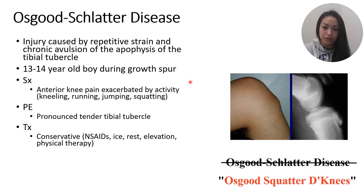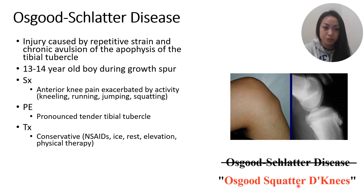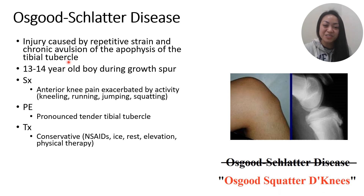Memory aid: 'Osgood-Schlatter Denise' — a squatter because the pain is exacerbated by squatting and activities like running, kicking, and playing sports; the knees because this involves the knee, the patellar ligament, and the tibial tubercle — unlike SCFE or Legg-Calvé which involve the hip. The peak age of 13 to 14 years for boys overlaps with SCFE, but SCFE is a hip problem while Osgood-Schlatter is a knee problem.